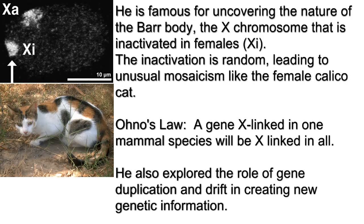He is famous for uncovering the nature of the Barr body — the X chromosome that is inactivated in females, indicated in the graph as big X little i. The inactivation is random in each cell during development, leading to unusual mosaicism like the female calico cat. His work led to what is known as Ohno's Law, which states that a gene X-linked in one mammal species will be X-linked in all mammal species. This has been an important discovery in modern genetic disease studies. We sometimes find exceptions to the law, such as monotremes, but it has held up remarkably well.